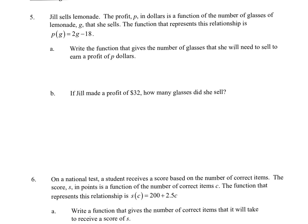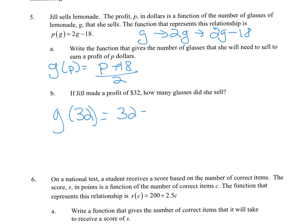For problem 5, this is about profit and lemonade glasses. Part a asks us to find the inverse function. Taking it backwards, we add 18 and divide by 2. If she made $32, how many glasses did she sell? That's 25 glasses. Remember to be precise and label your answers.